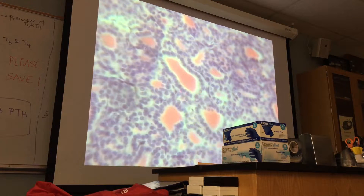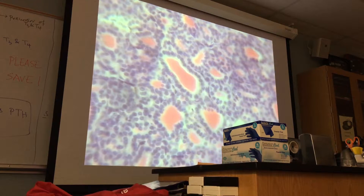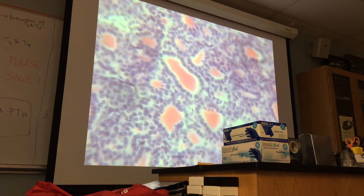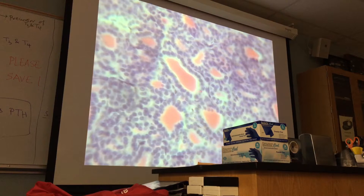When you see the cells in between follicles — like this cell — this is a follicle here, and there are so many follicles. But in between thyroid follicles, you will see parafollicular cells. These parafollicular cells secrete another hormone called calcitonin. So calcitonin, T3, and T4 are thyroid hormones. T3 and T4 are made by follicular cells, but calcitonin is made by parafollicular cells.